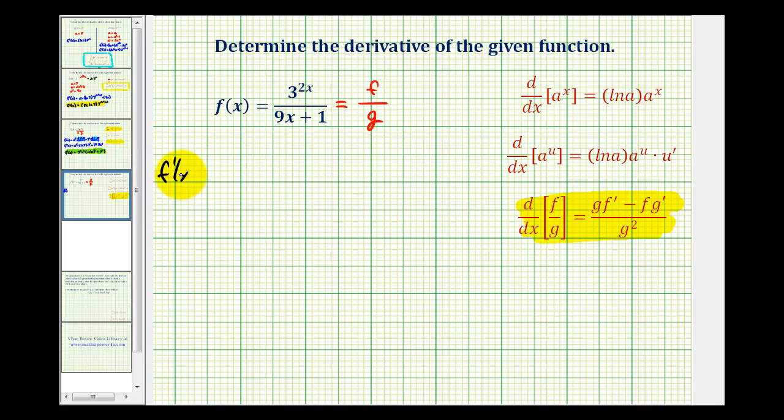So to determine f prime of x, we'll start with the denominator. Notice this is going to be the denominator squared, so we'll have the quantity 9x plus 1 squared.